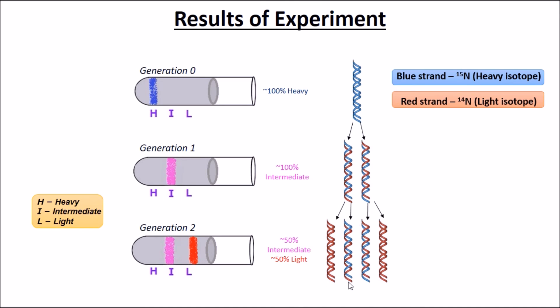In conclusion of the experiment, the only model that could explain this was the semi-conservative model. This is how the Meselson-Stahl experiment proved that the semi-conservative model was indeed correct.